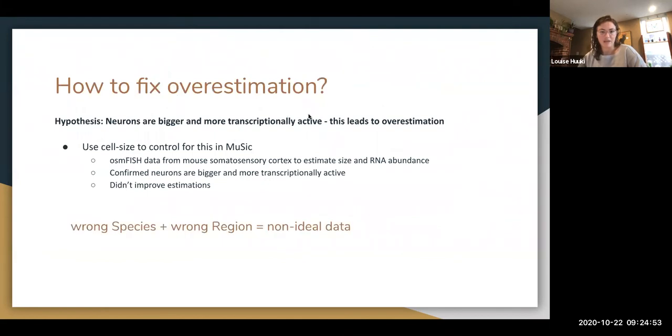But so how did they fix the overestimation? So they hypothesize that neurons are bigger, more transcriptionally active. So they take up more space, they have more RNA so they're overestimated by these methods. So to control for that, there is a parameter for cell size in MuSiC, which is the focus of kind of the rest of this. So they use the osmFISH data from mouse somatosensory cortex to estimate cell size and RNA abundance based on fluorescence imaging, I believe.